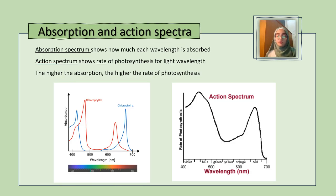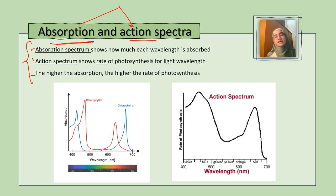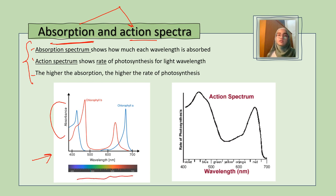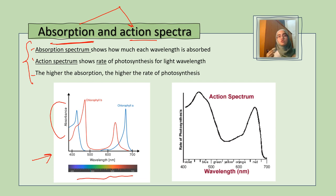Moving on from photosynthesis, we have two graphs that you must know: the absorption spectrum and the action spectrum. These are very important because they appear in both paper 4 and paper 5. The absorption spectrum has absorbance on the y-axis and wavelength on the x-axis. Different pigments absorb different wavelengths of light; the wavelength not absorbed is reflected, giving the pigment its color. That's why we see green — because green is reflected. The absorption spectrum shows how much of each wavelength is absorbed, typically showing multiple pigments like chlorophyll A and chlorophyll B.